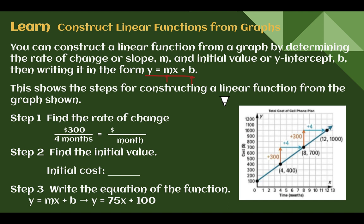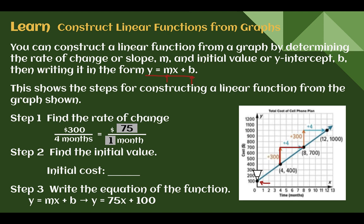Here we can see the steps to construct a linear function from the graph shown. First, let's find our slope or rate of change with our ratio of rise over run. This one went up 300 and over 4. If you're not given points on the line, choose places where the line goes through the corners of the coordinate grid nicely — those values will be easier to work with. Up 300 over 4 gives us $75 per month, so our rate of change is 75. Then we find our initial value — where it is on the y-axis when x equals 0 — which is $100. Plugging those into our equation, y equals 75x plus 100.